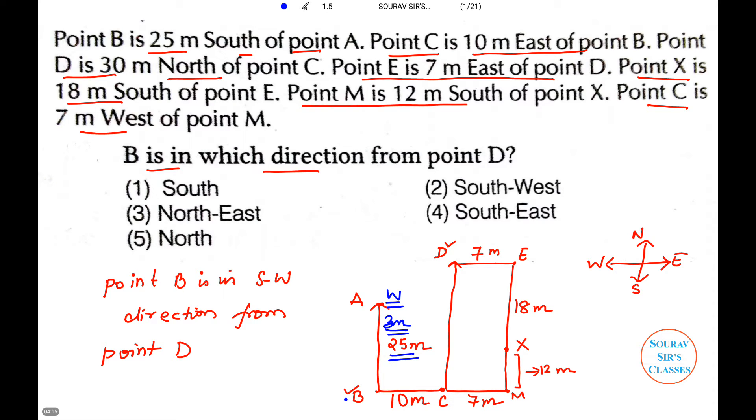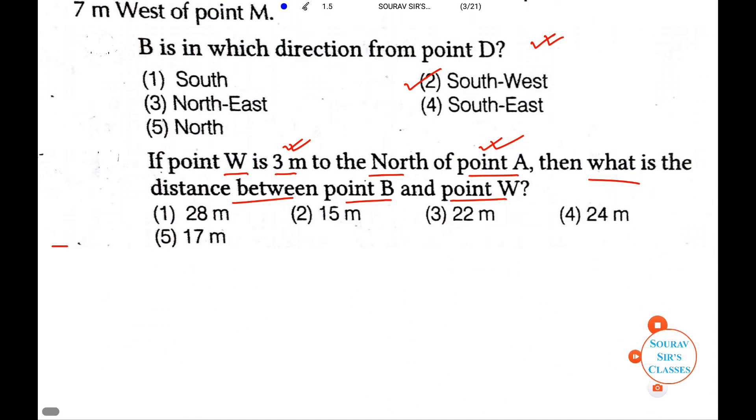So, from the diagram, it is clear that the distance between B and W is AB plus AW, and this was 25 plus 3, so it will give us 28 meters.